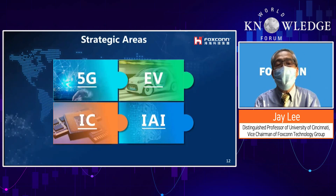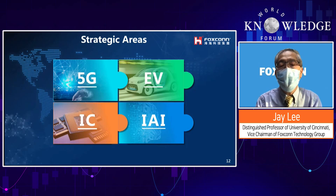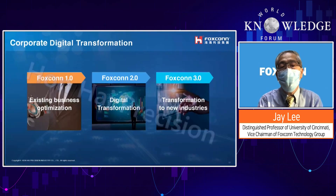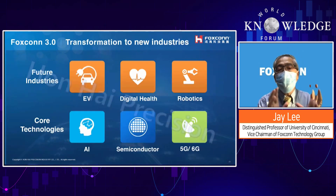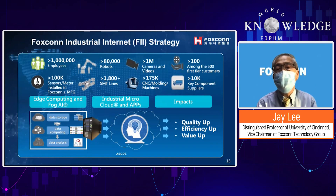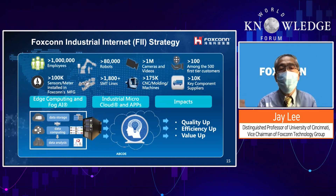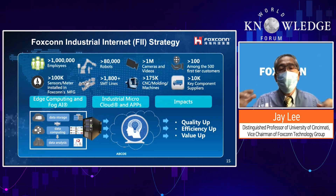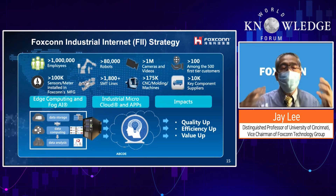At Foxconn, our journey involves 5G, semiconductors, EVs, and AI, with a three-step roadmap: 1.0, 2.0, 3.0. We want EV, digital health, and robotics as major driving industries, with AI, semiconductor, and 5G/6G as our core technologies. We have a data-rich environment — 125,000 machine tools and 80,000 robots — which is a great backyard opportunity to prove our industrial AI before serving other companies.